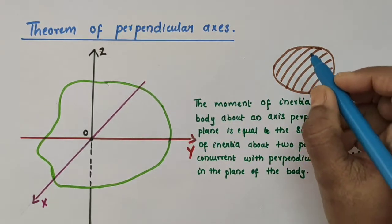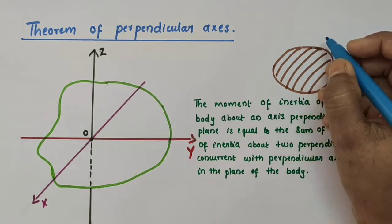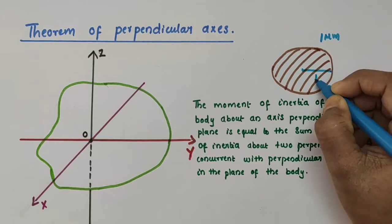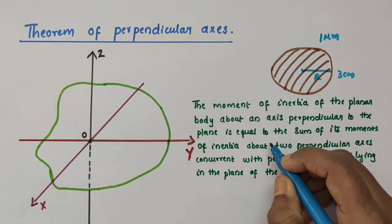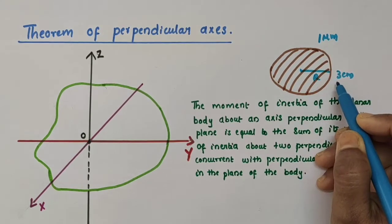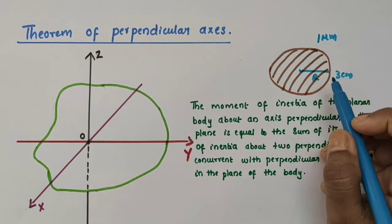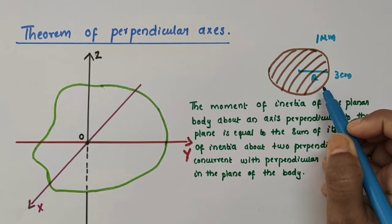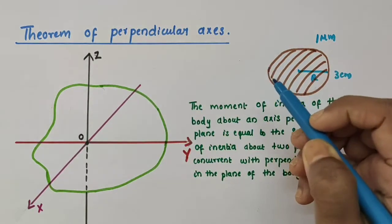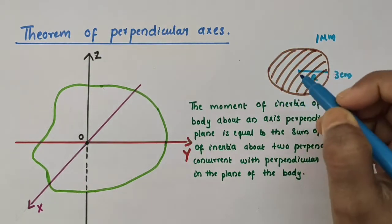For example, if we consider a disc and let its thickness be 1 micrometer and let its radius be 3 centimeters — its thickness is 1 micrometer and radius is 3 centimeters. So its thickness is very small compared to its radius. The theorem of perpendicular axis can be applied here to find out the moment of inertia of this disc about a particular axis.